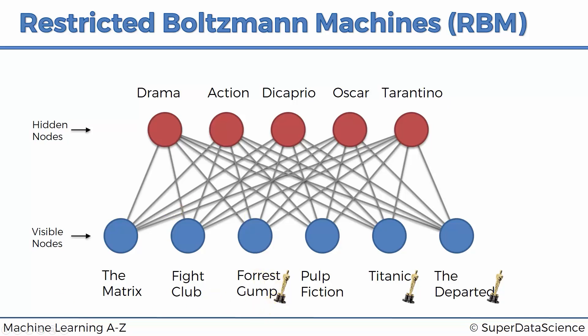Now let's look at the specific user we want to make a recommendation for. They saw The Matrix and didn't like it (zero). They haven't seen Fight Club. They saw Forrest Gump and liked it (one). They saw Pulp Fiction and didn't like it. They saw Titanic and liked it. And they haven't seen The Departed. We want to predict: will they like Fight Club? Will they like The Departed?